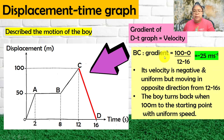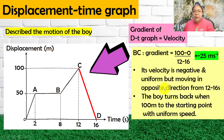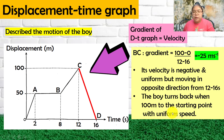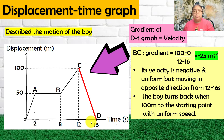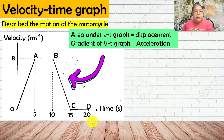For C to D, the gradient is (100 minus 0) divided by (12 minus 16), giving a negative 25 m/s. The velocity is negative and uniform, meaning the object moves in the opposite direction from 12 to 16 seconds. The boy turns back 100 meters to the starting point with uniform speed, completing the return in 4 seconds.